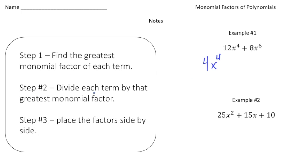Part two, it says divide each term by that greatest monomial factor. So I'm going to divide 12x to the fourth by 4x to the fourth. So 12 divided by 4 is 3. I'm going to write 3 over here. And x to the fourth divided by x to the fourth is just a 1, so that part is going to be just 3. The second part, 8x to the sixth divided by 4x to the fourth. Well, 8 divided by 4 is 2, and x to the sixth divided by x to the fourth is x squared.